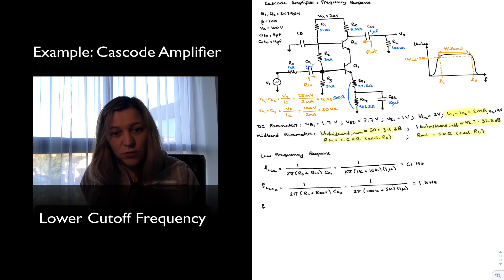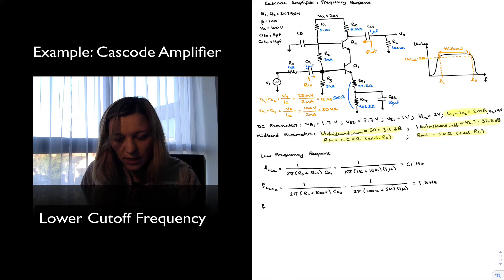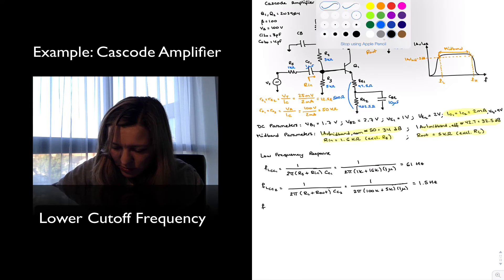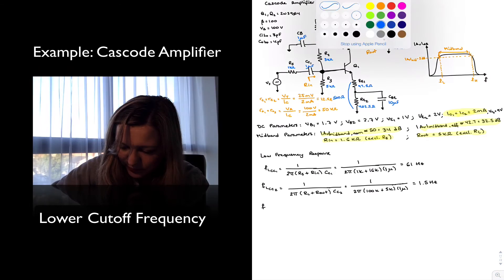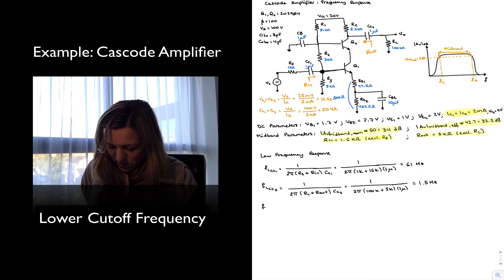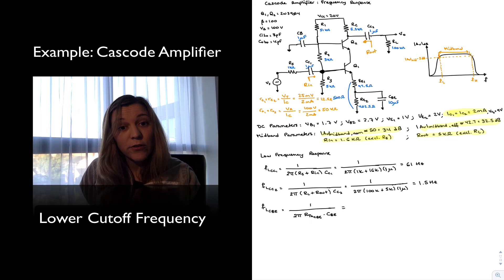And next, my bypass capacitors. I'm going to do CBE first, and then CB, which doesn't have a value, so I'm going to go ahead and give it 1 micro. So my low cutoff frequency due to CBE would be 1 over 2π, Thevenin resistance connected to CBE, times CBE. And let's go ahead and calculate now that Thevenin resistance.